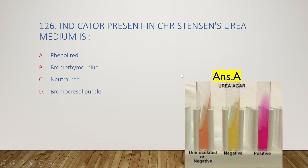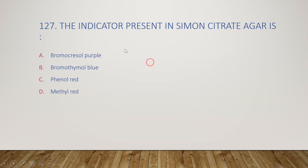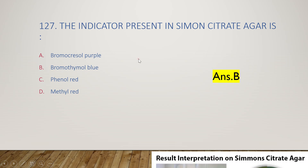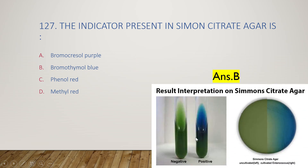The next question: the indicator present in Simon citrate agar is bromocresyl purple, bromothymol blue, phenol red, or methyl red? The right answer is option B, bromothymol blue. If bacteria utilize citrate as a source of carbon, they show a blue color of bromothymol blue — that is the positive reaction. In a negative reaction, they cannot utilize the citrate.